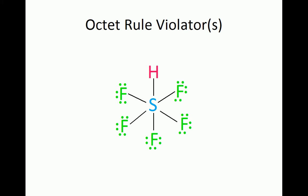Now getting back to the question, we must determine which atoms violate the octet rule. Looking at the Lewis structure for HSF5, we must count the electrons around each element in the structure.